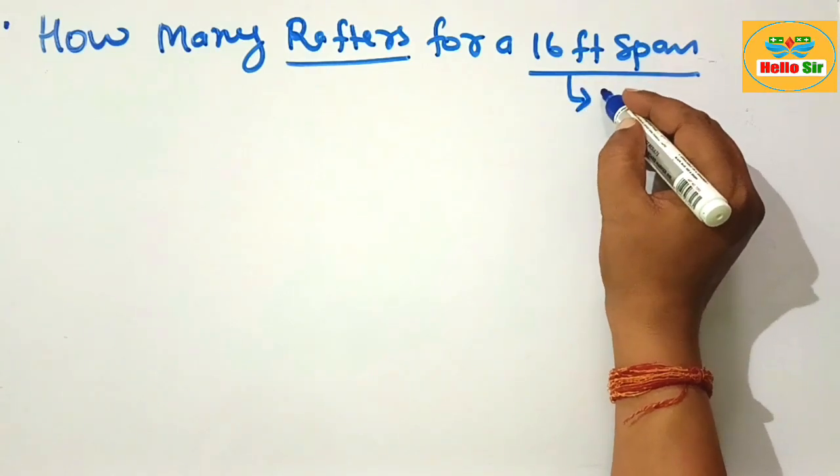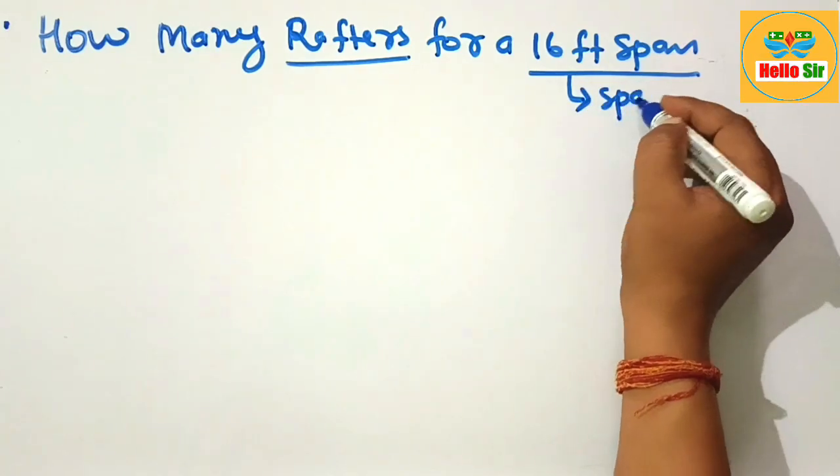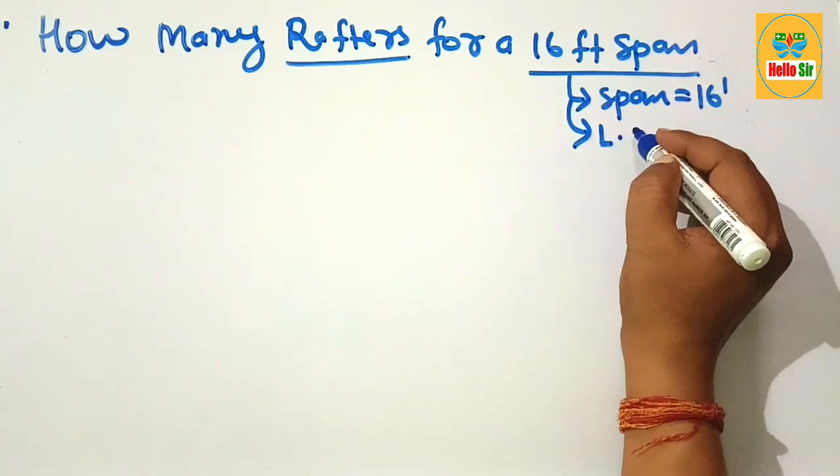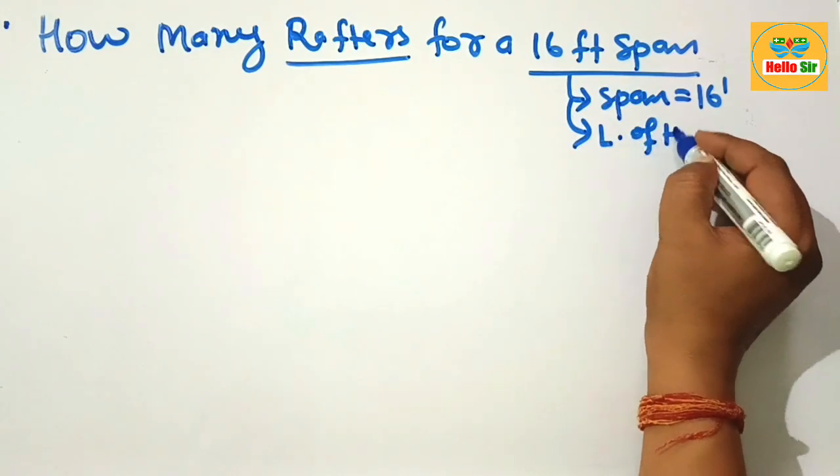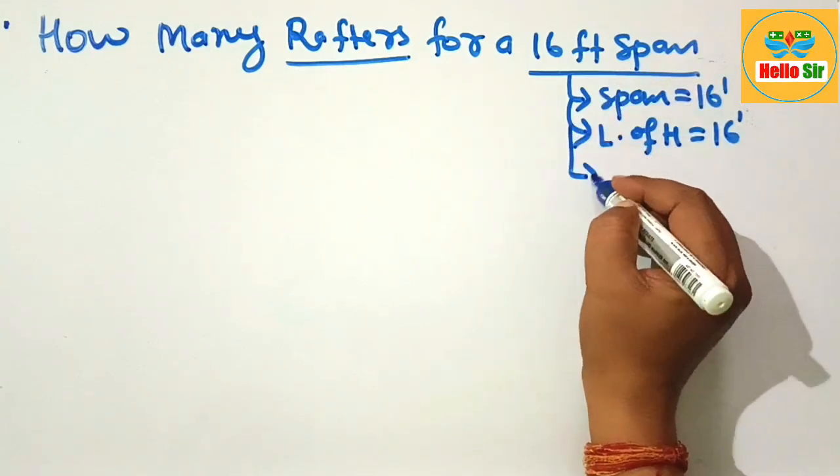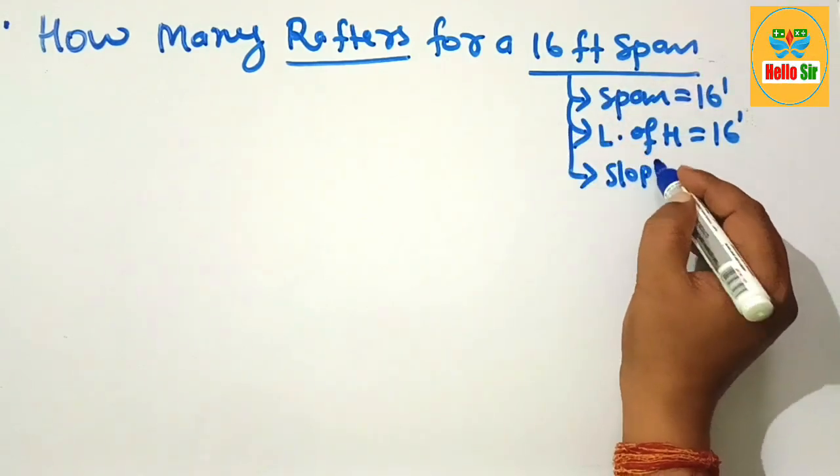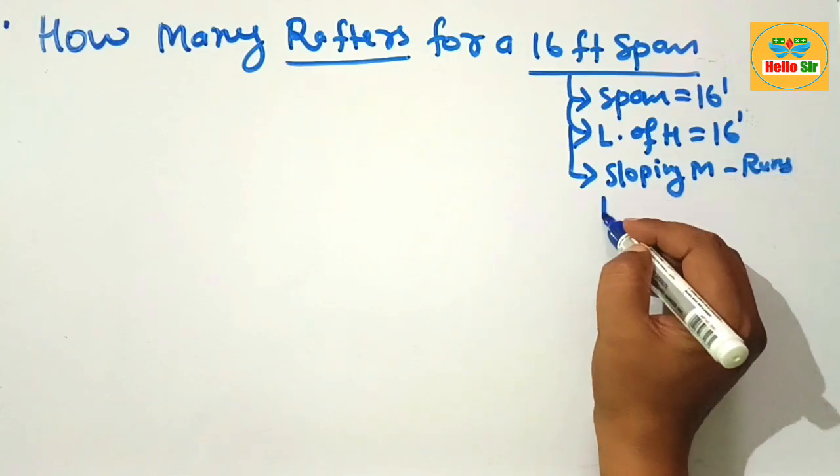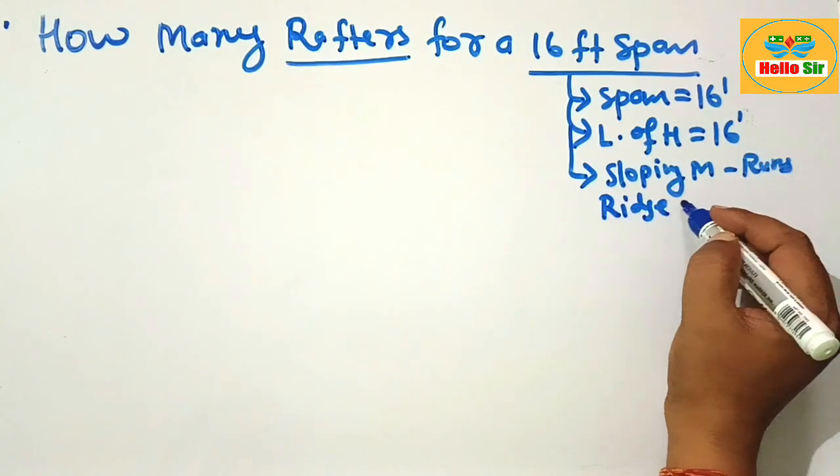Here the span is about 16 feet, meaning the length of the house is about 16 feet. And you know that the rafters are sloping members that run from ridge beam to wall.